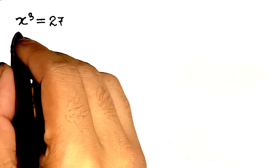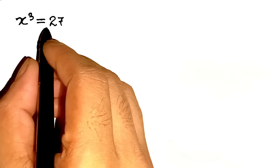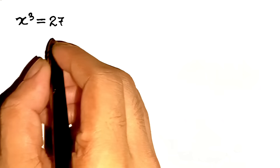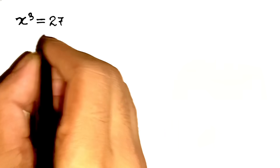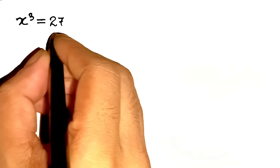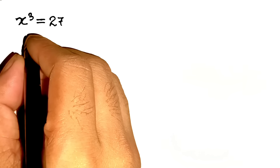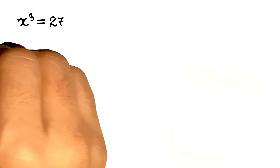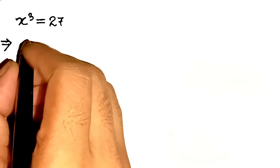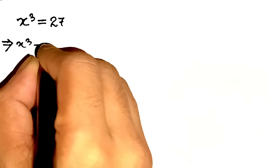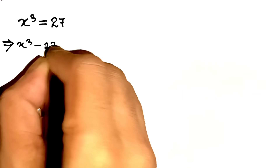First up, we've got x cubed equals 27. To make this easier to work with, let's shift that 27 over and turn it into a proper polynomial equation. So we subtract 27 from both sides and get x cubed minus 27 equals 0.